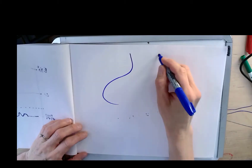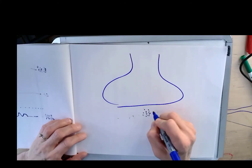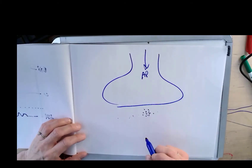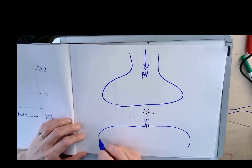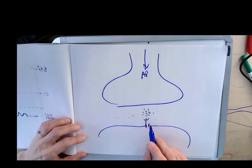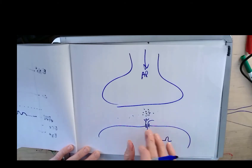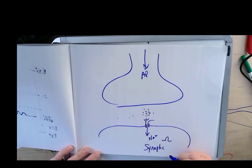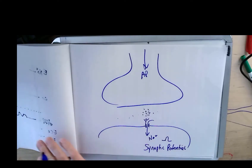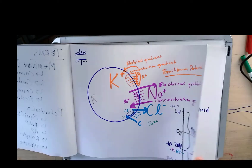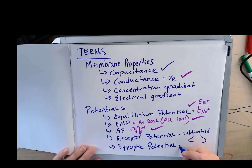Here is your synapse: you release neurotransmitters because of an action potential that comes down, and those neurotransmitters bind to a receptor attached to a channel that opens. These are not voltage-gated channels — these are neurotransmitter-gated channels. In this case, it's a ligand-gated ionotropic channel that causes a little bit of positive current coming in — let's call it sodium. That leads to a small depolarization at the synapse, called a synaptic potential.